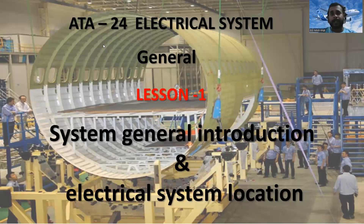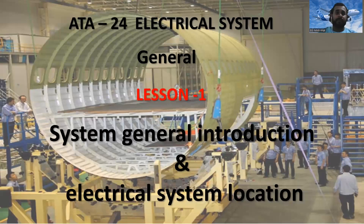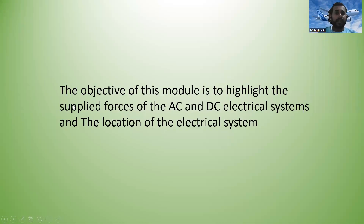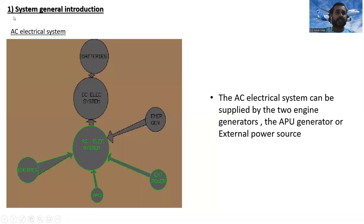Today is ATA Chapter 24 Electrical System General, Lesson Number One. We are going to learn about the system general introduction, the electrical system, and electrical system location. The objective of this module is to highlight the supply sources of the AC and DC electrical systems and the location of the electrical system components.